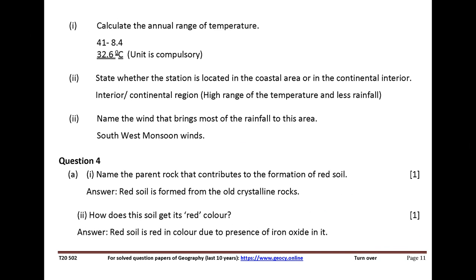Study the climatic data given below and answer the questions that follow. Calculate the annual range of temperature. Answer: 32.6 degrees Celsius. State whether the station is located in the coastal area or in the continental interior. Answer: interior. Name the wind that brings most of the rainfall to this area. Answer: southwest monsoon.